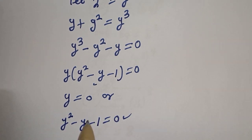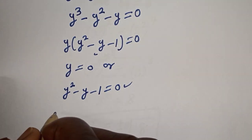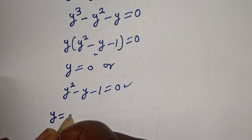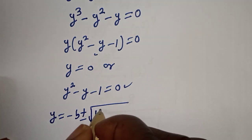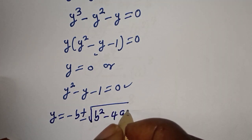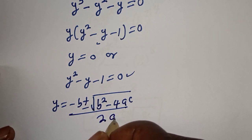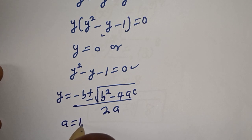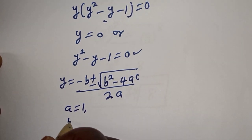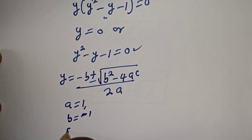This is a quadratic equation, which can be solved using the quadratic formula. The quadratic formula gives us y is equal to negative b, plus or minus the square root of b squared minus 4ac, all over 2a. From this equation, a is equal to 1, b is equal to negative 1, and c is equal to negative 1.